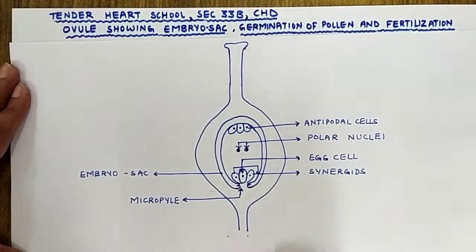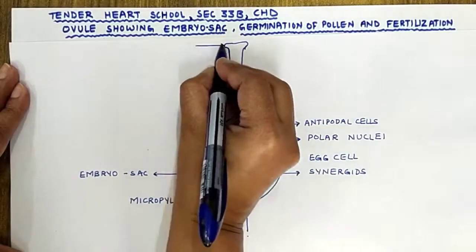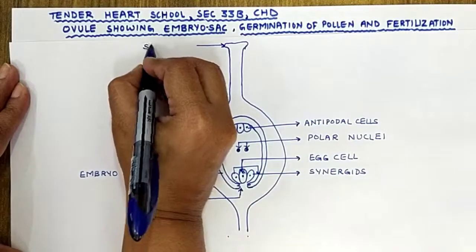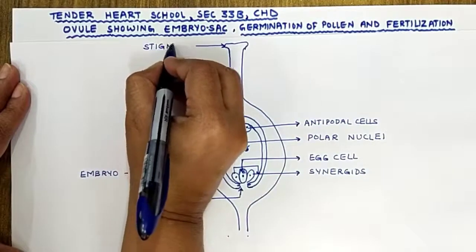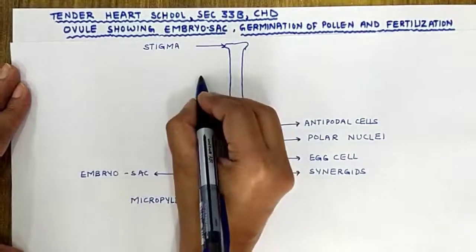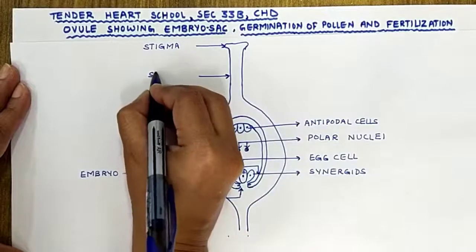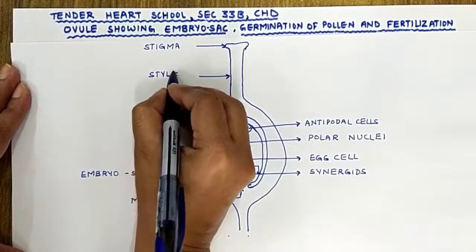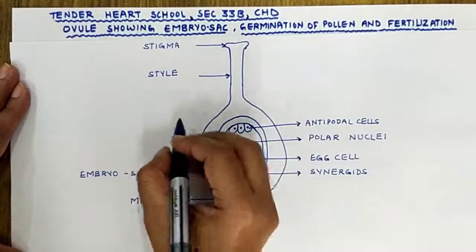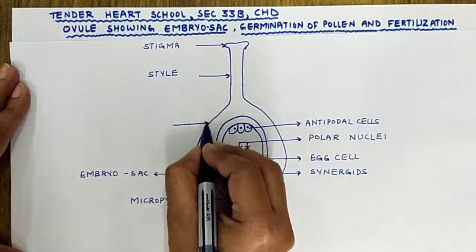Now let us label the major parts of the carpel. This is the stigma. This is the style. And this one is the ovary.